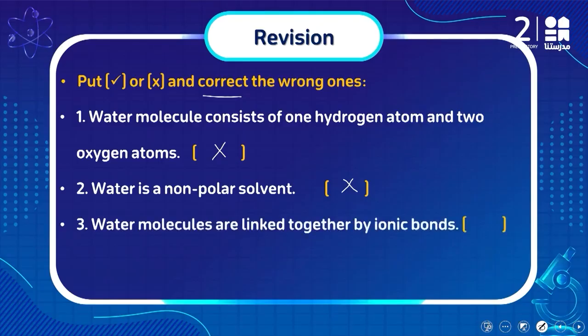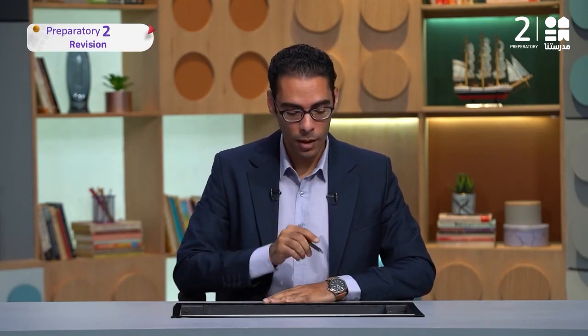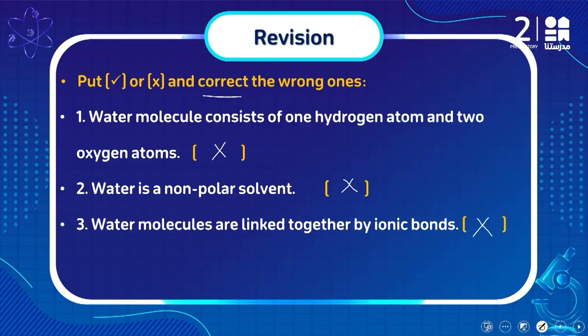The next question states that water molecules are linked together by ionic bonds. This is a really important and tricky question. When we talk about multiple water molecules linked together, the bond between them is not ionic — that's false. The correct answer is that water molecules are linked by hydrogen bonds, not ionic bonds.